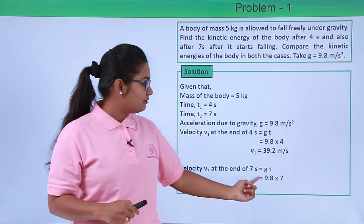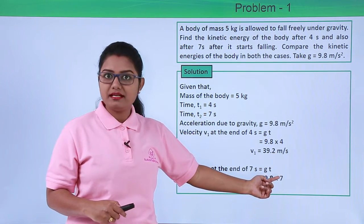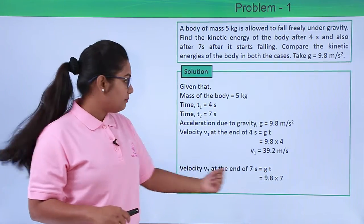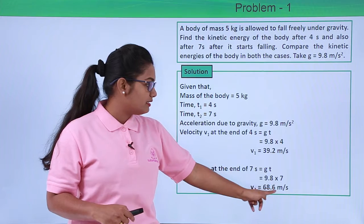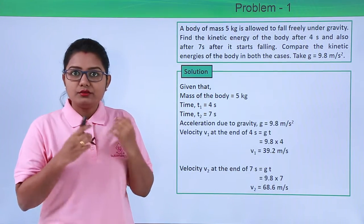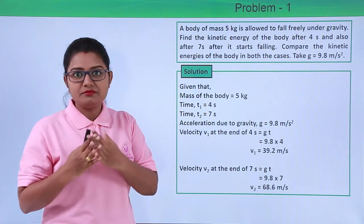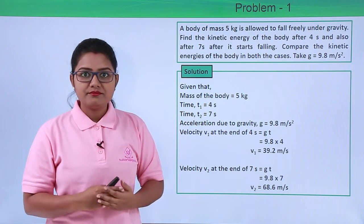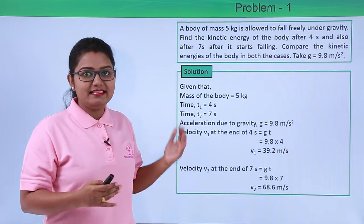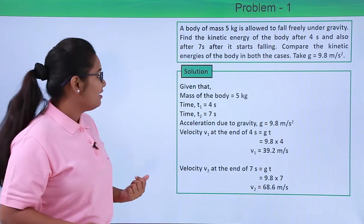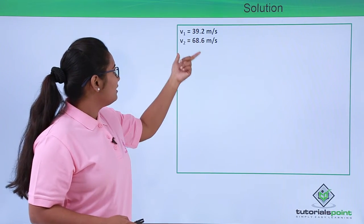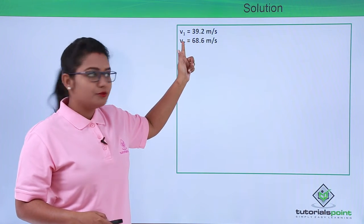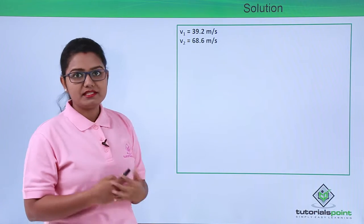For V2, we have 9.8 multiplied by 7 since T2 equals 7 seconds. So V2 equals 68.6 meters per second. Now we have both velocity values as well as the mass of the body. So we just need to apply the formula and get the answer. We have V1 equal to 39.2 meters per second and V2 equal to 68.6 meters per second.